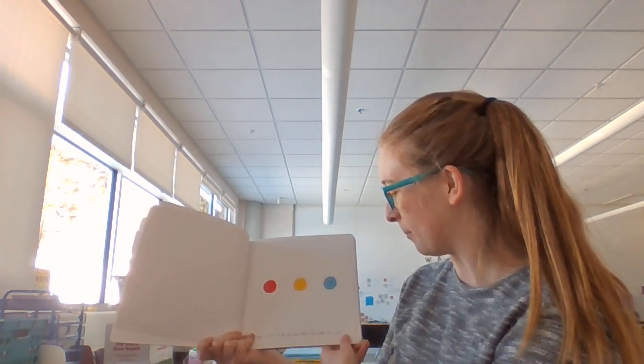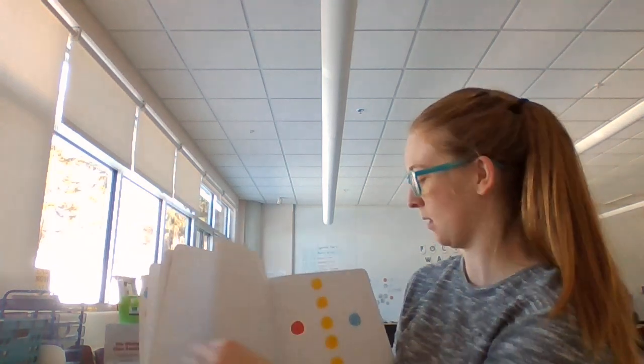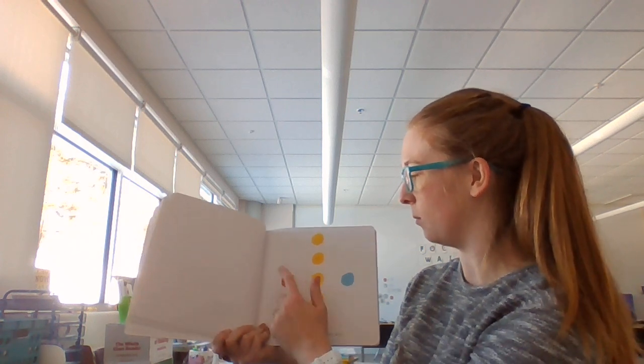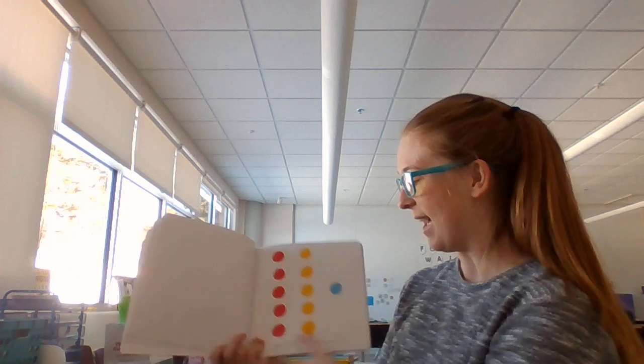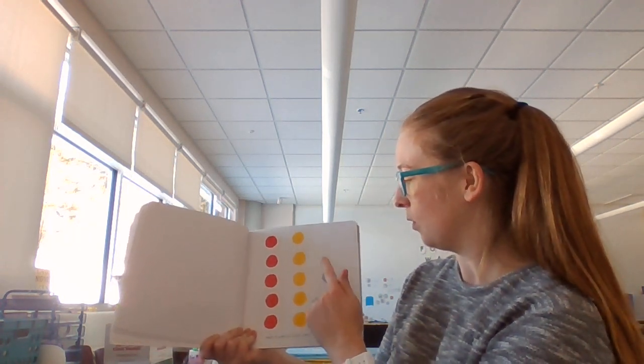Five quick taps on the yellow one. One, two, three, four, five. And then five taps on the red one. One, two, three, four, five. And finally, five taps on the blue one. Five.